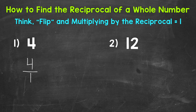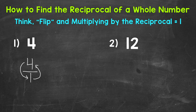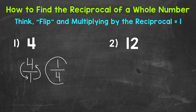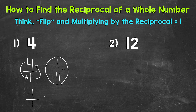Now we can flip this fraction to get the reciprocal. So if we flip it, this denominator is going to become the numerator, and the numerator is going to become the denominator. So the reciprocal of 4 is 1 fourth. Now let's multiply our number by the reciprocal to show that we get 1. So let's take 4 in fractional form and multiply it by 1 fourth.